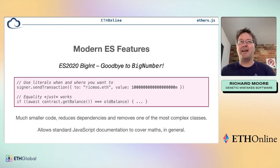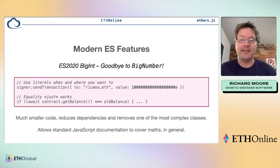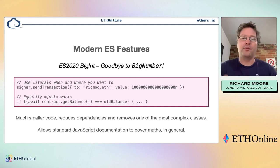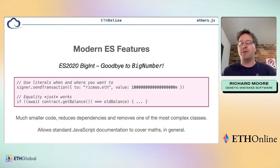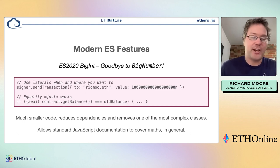One of the big ones people always want is BigInts. BigInts are now built into JavaScript — the last holdout was Safari around September 2020. Previously, using BigNumber required a lot of extra code with .mul(), .add() calls and static constructors. Now BigInts just work — you add a little 'n' to the end of your number and you can have numbers that exceed IEEE 754 limits. You can multiply them together, and check equality with standard operators.